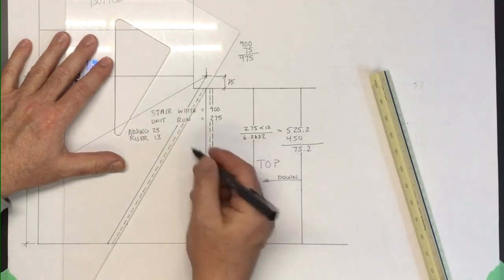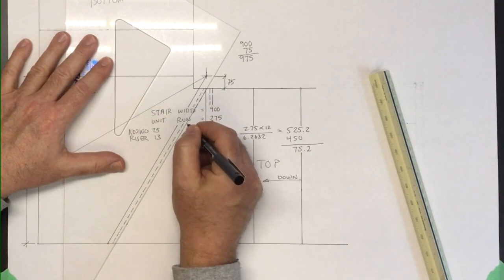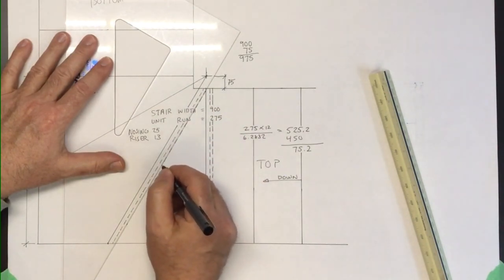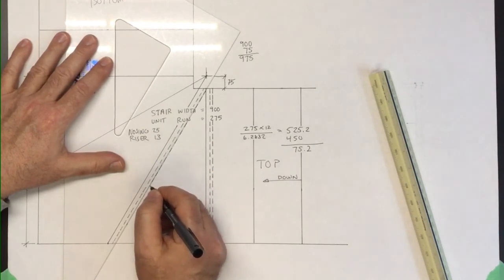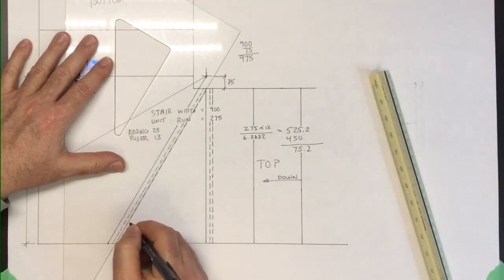And the reason that I'm drawing these dashes or this nosing and riser on this side of the tread line is the fact that this is the travel. And so because I labeled this as top and this is down, obviously I have to make sure that I put my riser on the right side of the line. If you don't label your drawing with the top, then I wouldn't know if you know what you're doing.